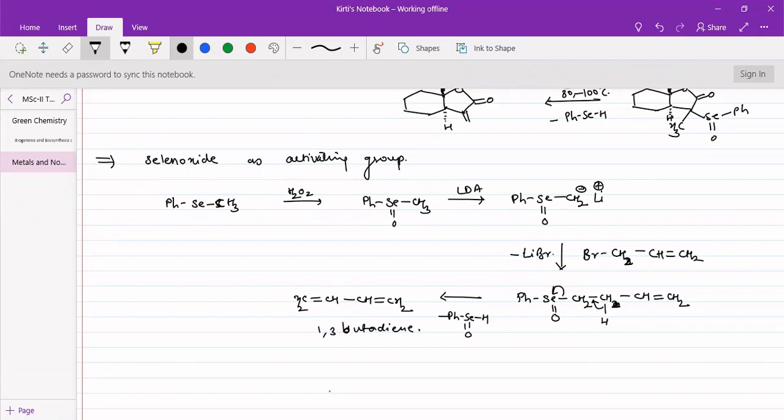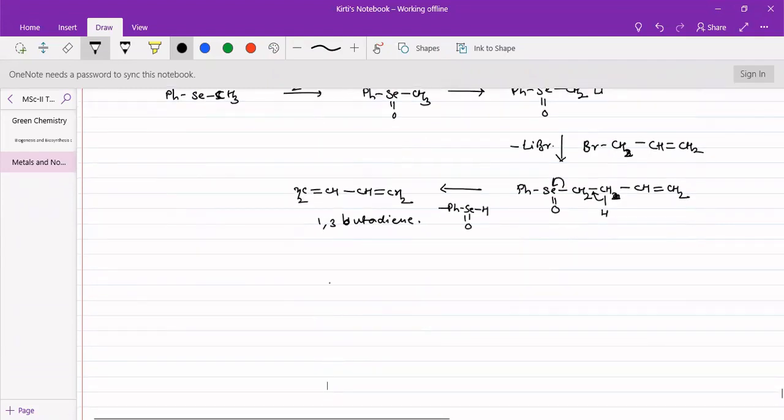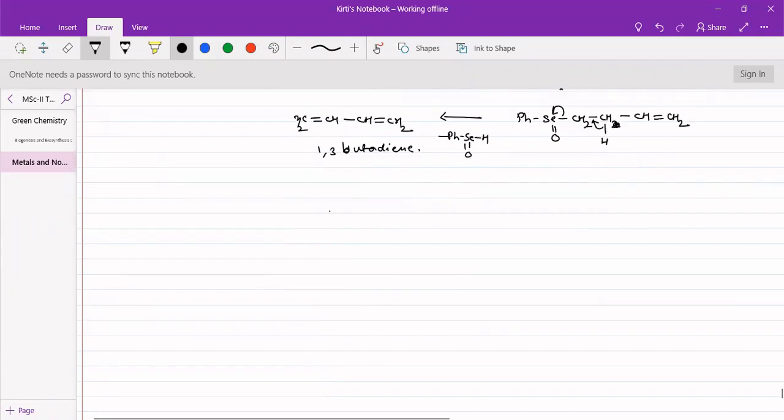Similarly, you can use selenoacetals as precursors for diselenide non-stabilized carbenes. For this, if we have a ketone when reacted with two moles of selenol in presence of any Lewis acid, it will be giving us diselenide. This compound we call selenoacetals.